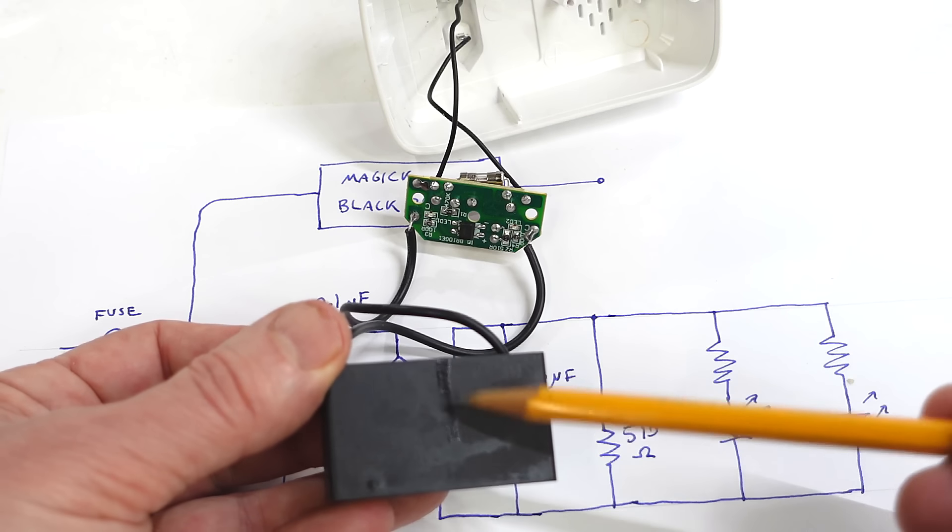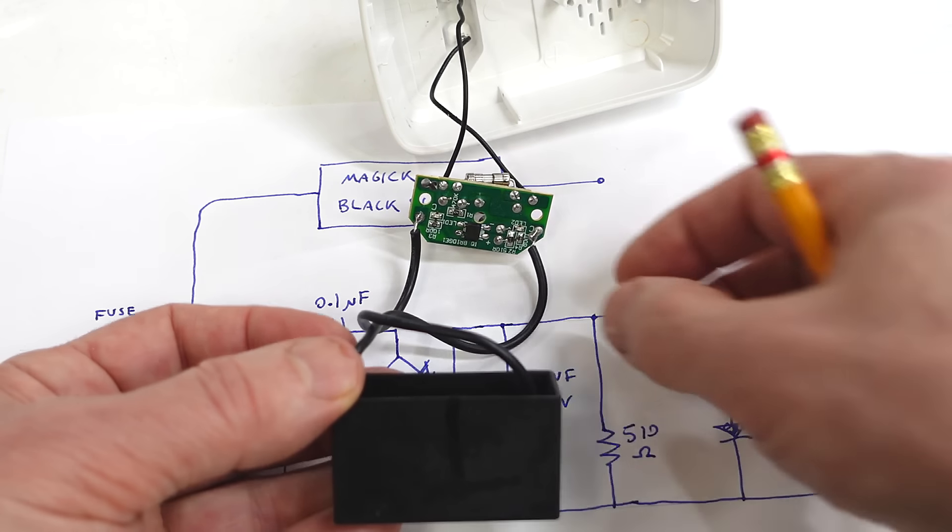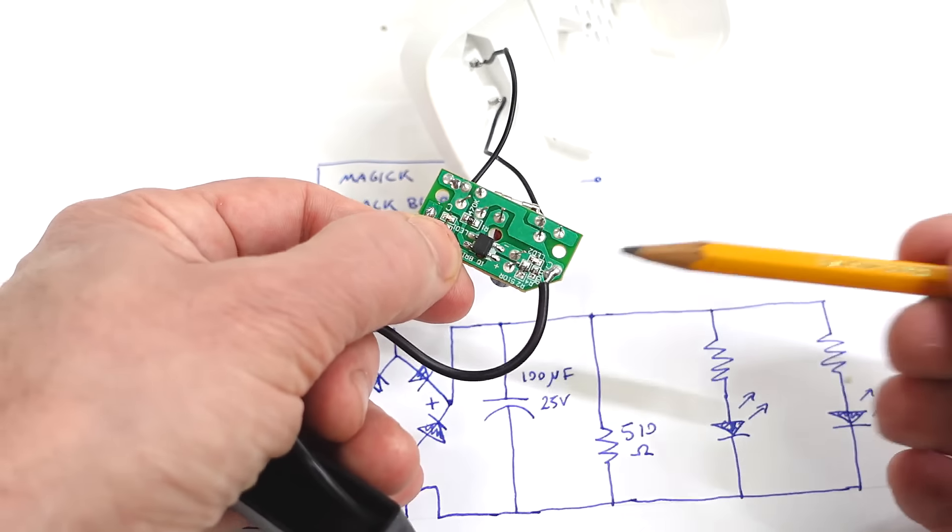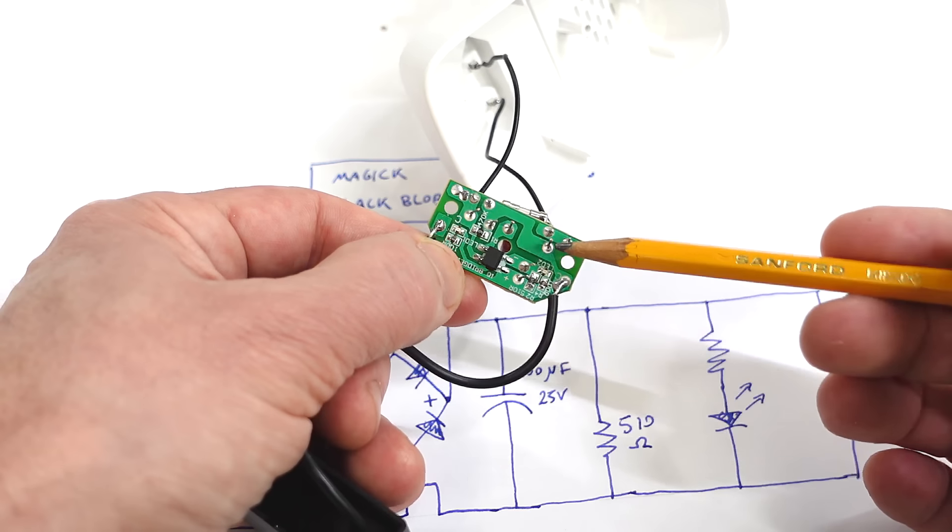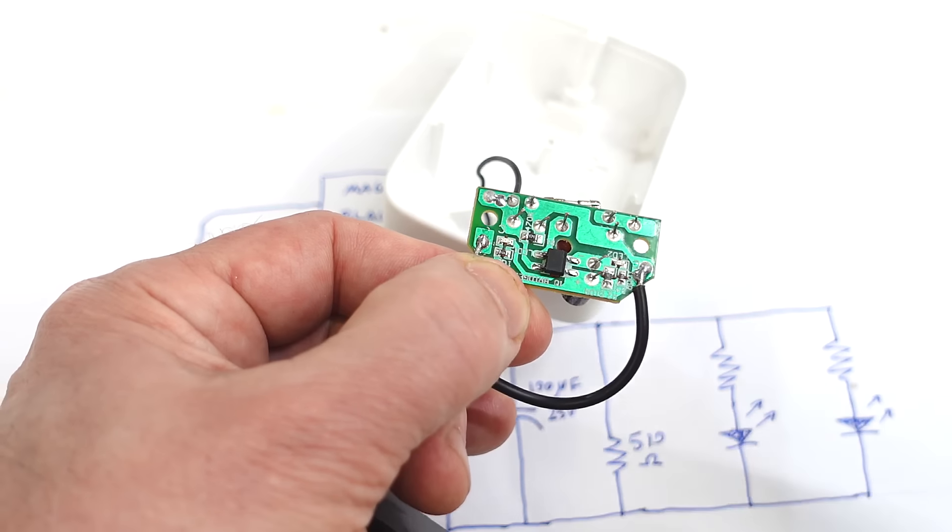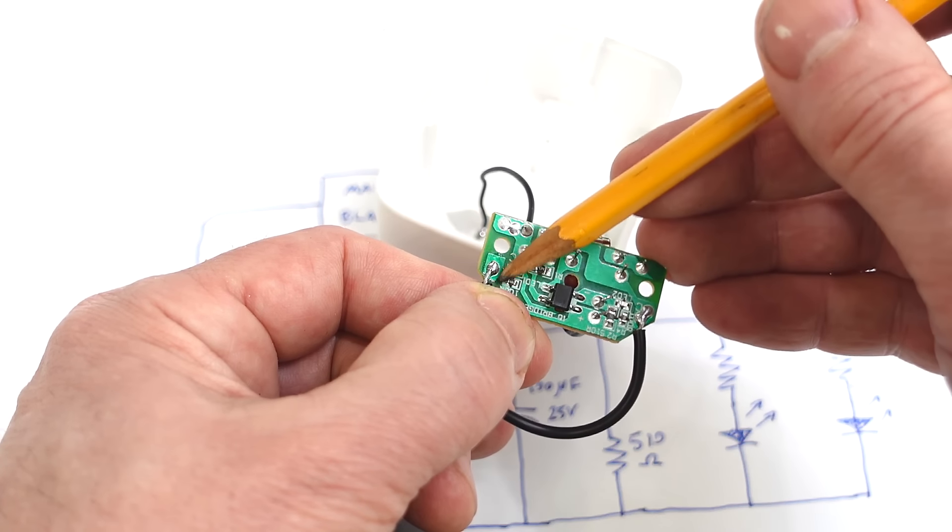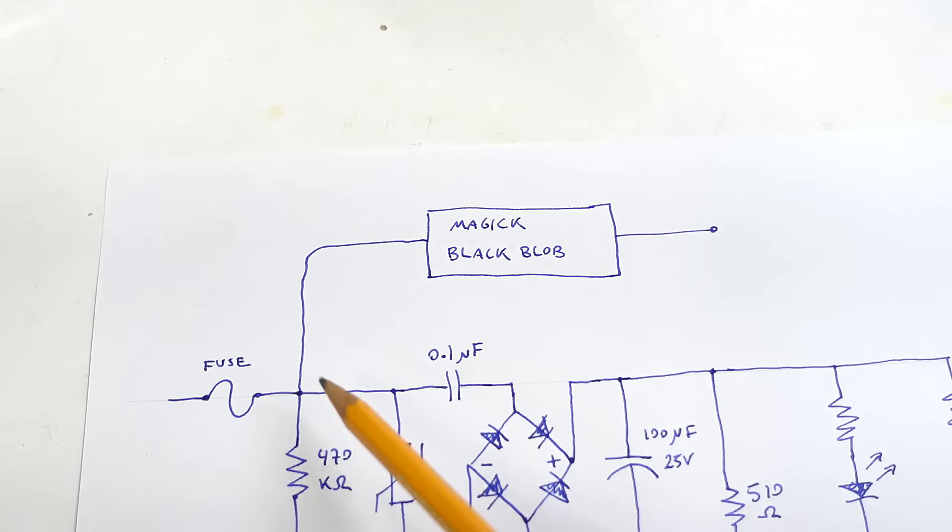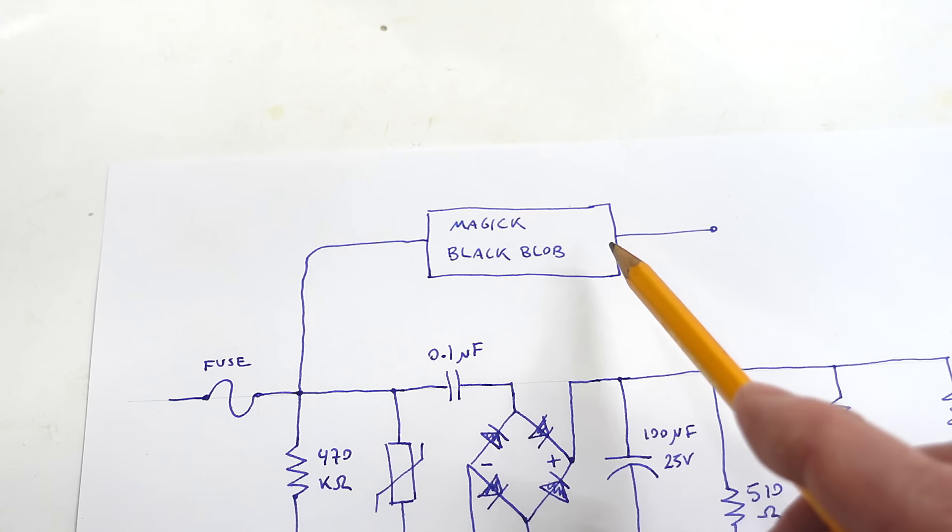So the power saving magic must be in this big black blob. And one side of this is connected directly to the input power and the other side to this solder pad here. And this is a single sided circuit board and there's no other connection to the solder pad. So this blob is only connected on one side.